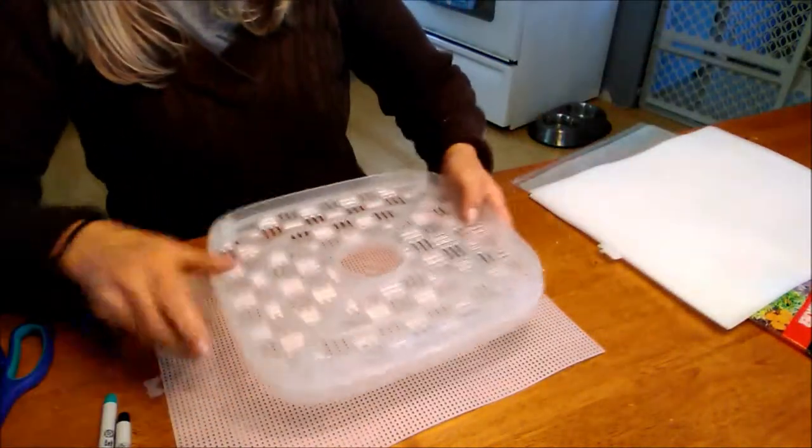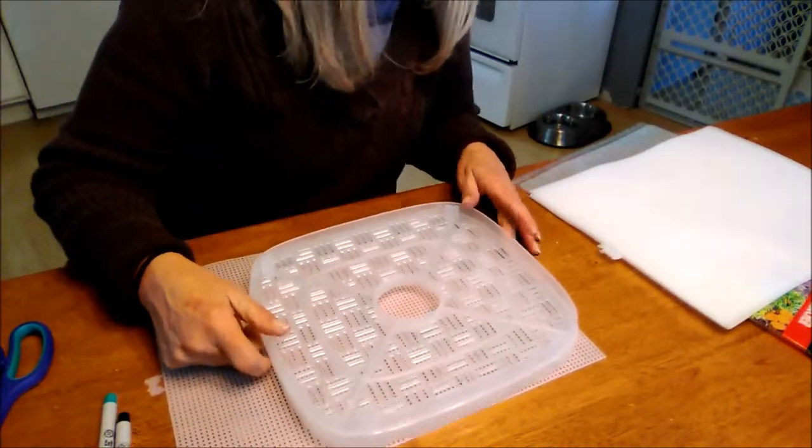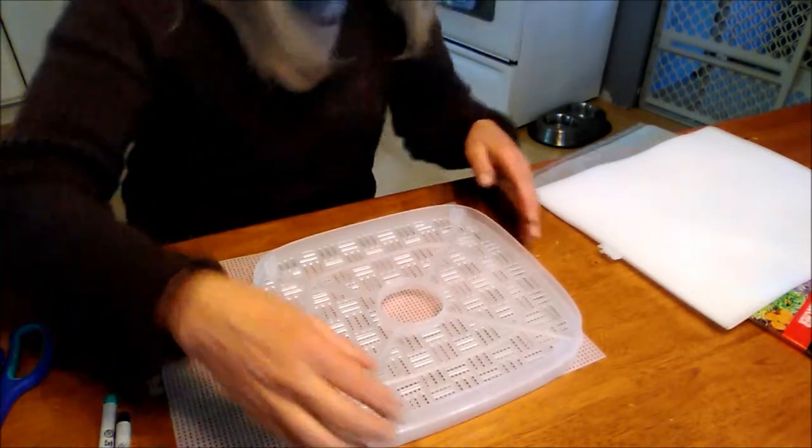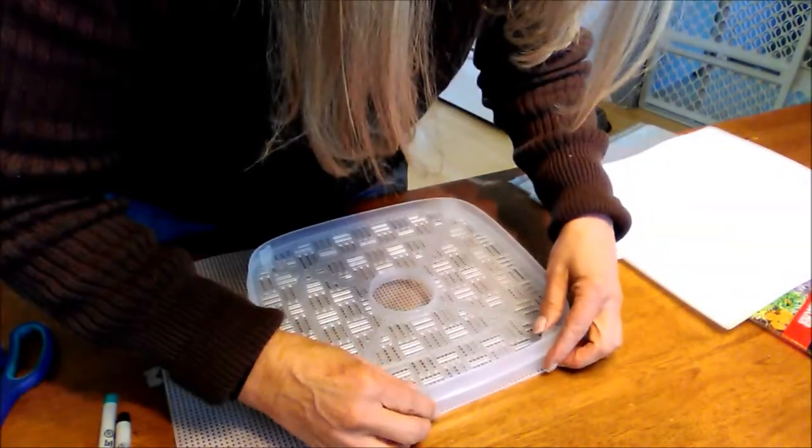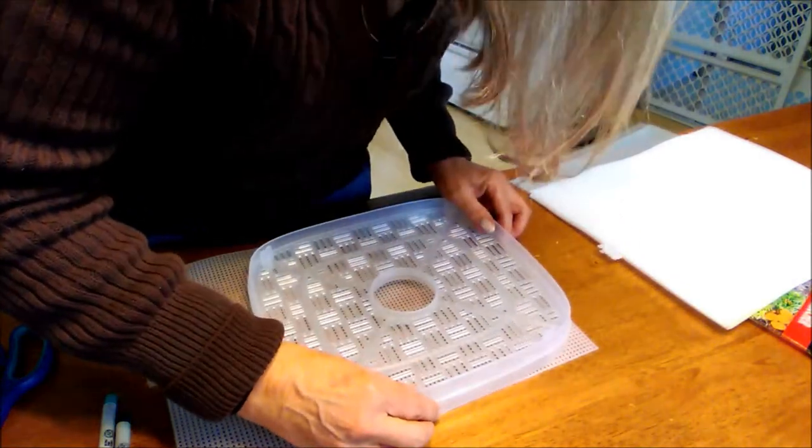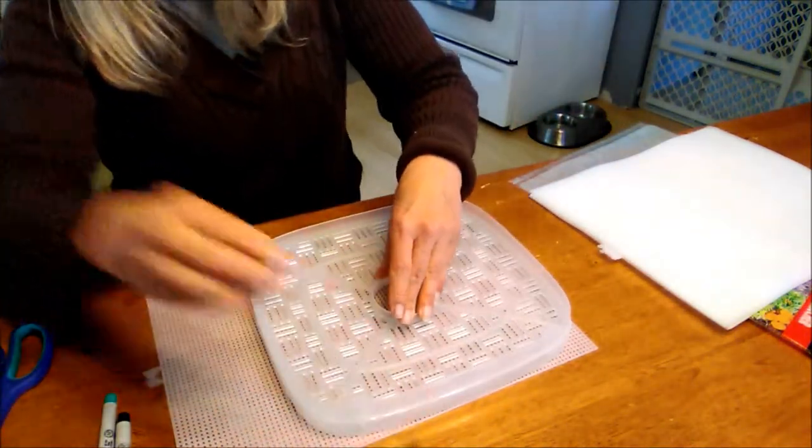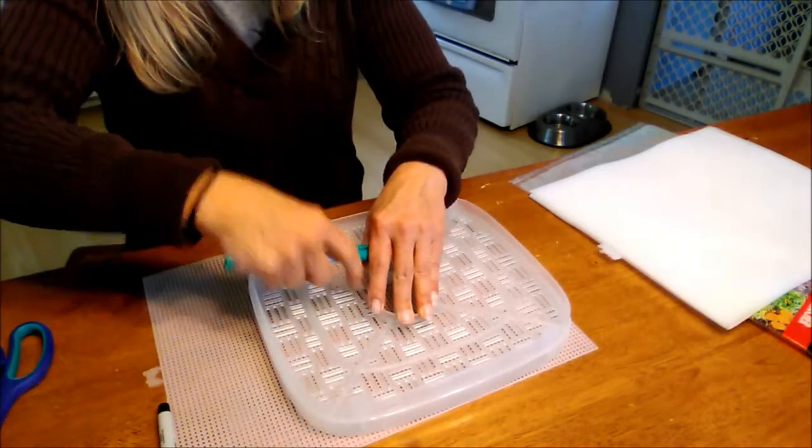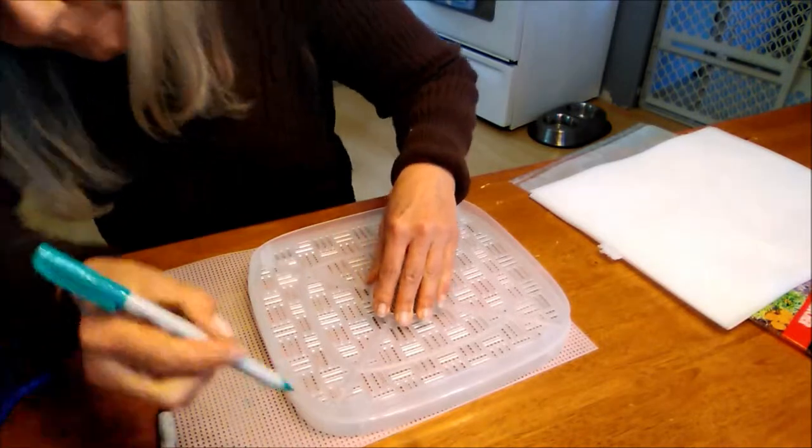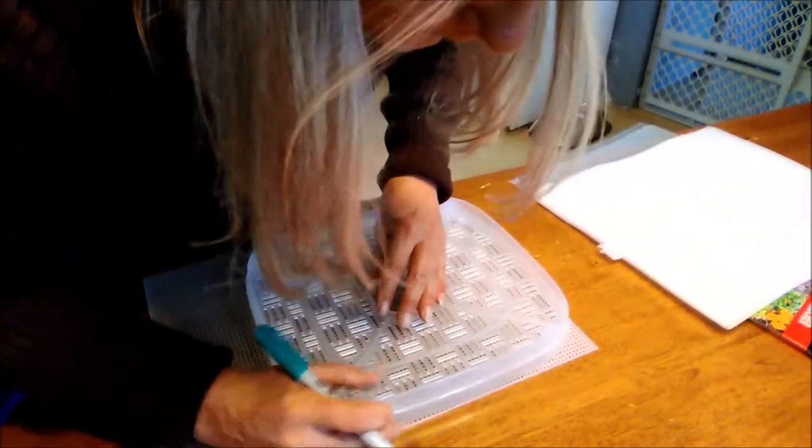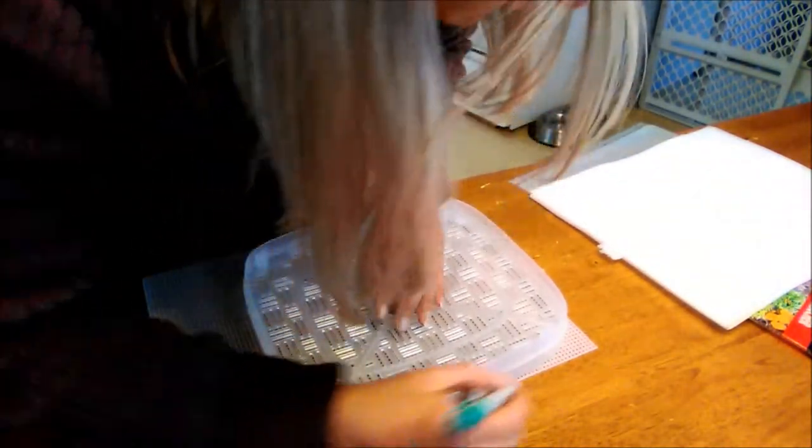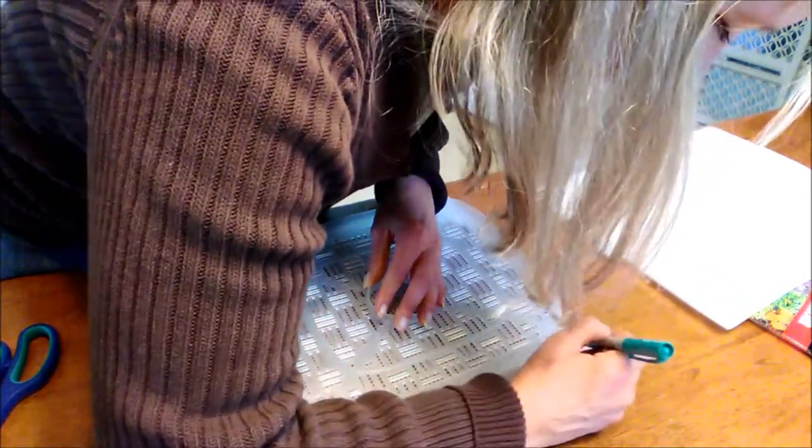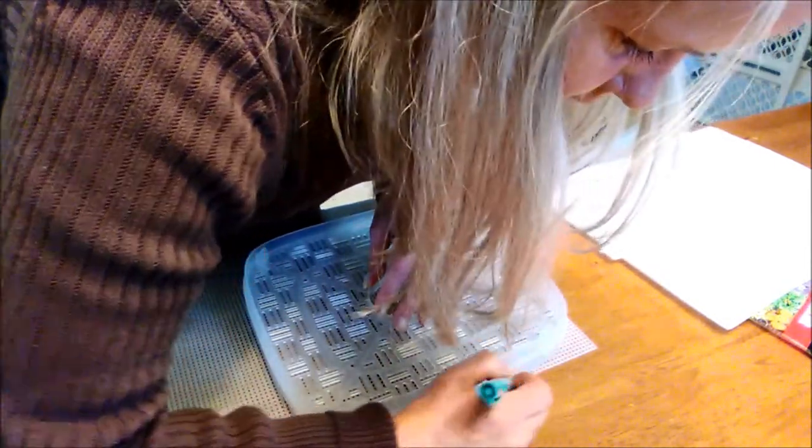Alright, so the first thing I'm going to do is trace along the outside of the tray so that I can get the size that I need. And this first one doesn't have to be perfect but you want to try to get it as close as you can.